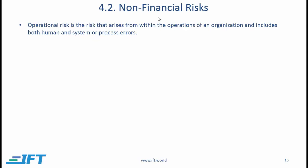Non-financial risks come from sources other than financial markets. A major type is operational risk — the risk that arises from within the operations of an organization, including both human and system or process errors. For example, a bank teller accidentally crediting the wrong amount is operational risk. The famous case of Nick Leeson of Barings Bank, who in 1995 destroyed the 200-year-old bank by engaging in highly speculative trades to cover up losses, is also operational risk. The risk of a computer system failing is operational risk as well.